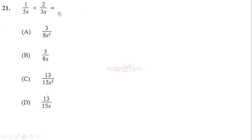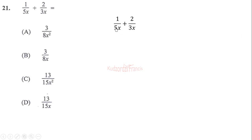To do that we need to make sure that the denominators are the same, so we find the LCM of 3x and 5x, which is 15x. We need to multiply 5x by 3 in order to get 15x, so we must do the same to the numerator.